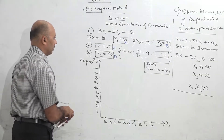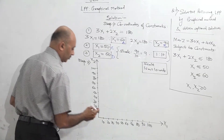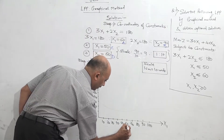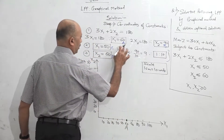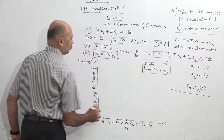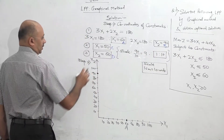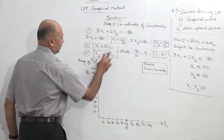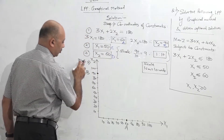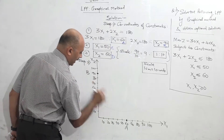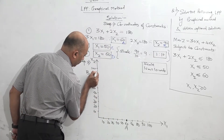Now we will plot the points on the graph. Point A is x1 = 60, so this is A. Point B is x2 = 90, so this is point B. A and B are the coordinates of the first constraint line. So we will join them — A and B — and we will get our line representing the first constraint.